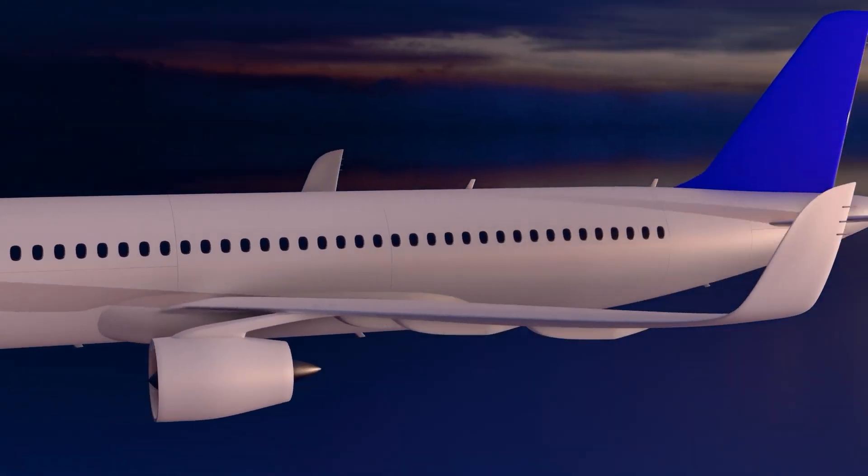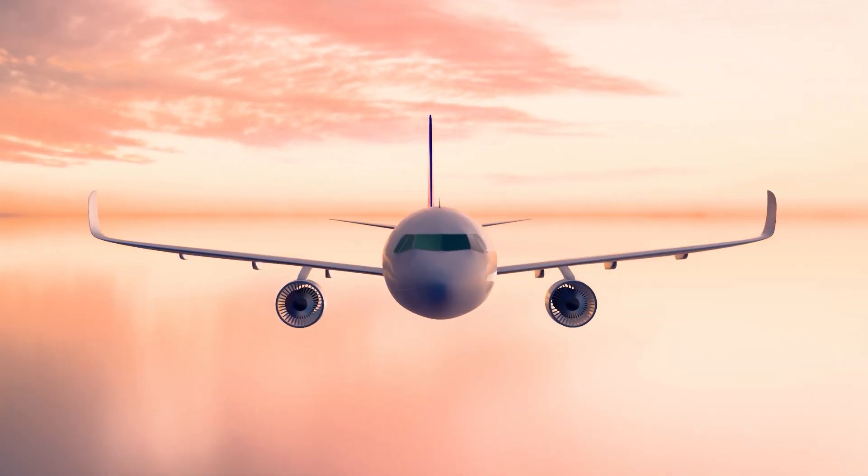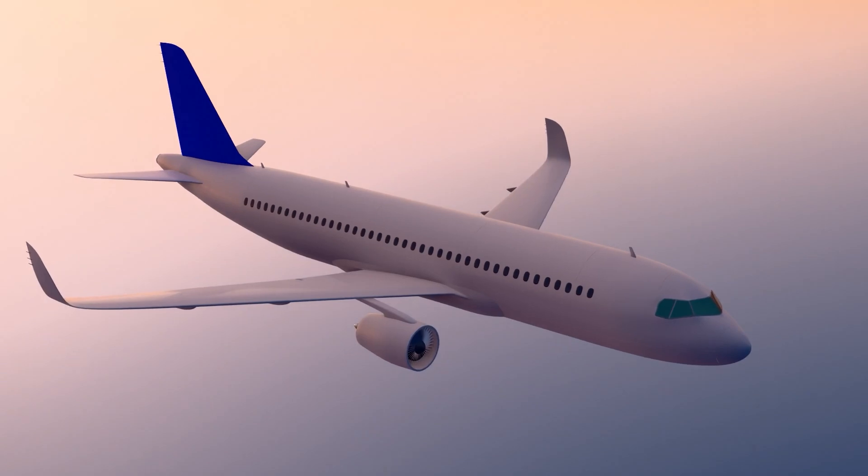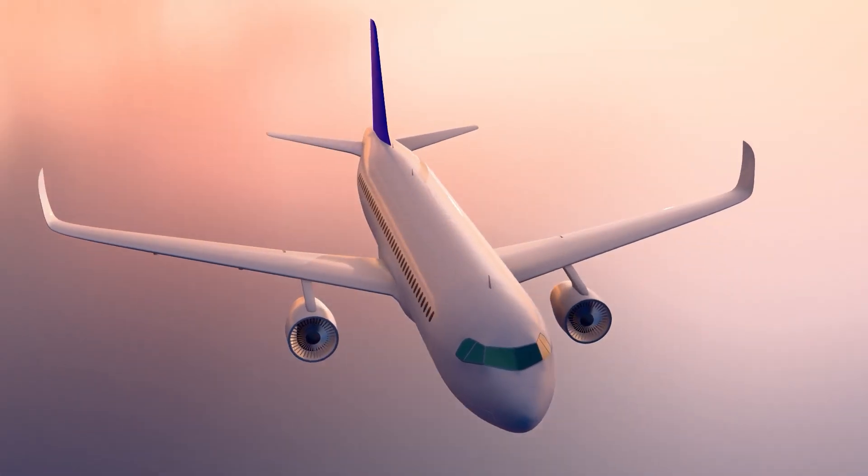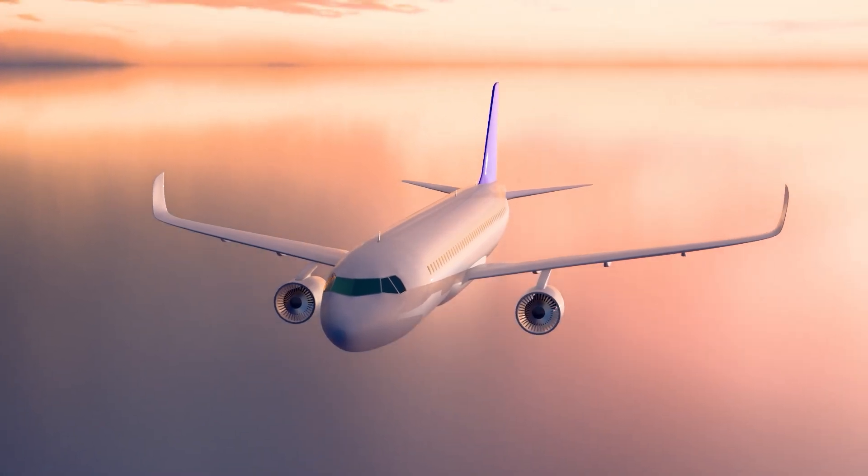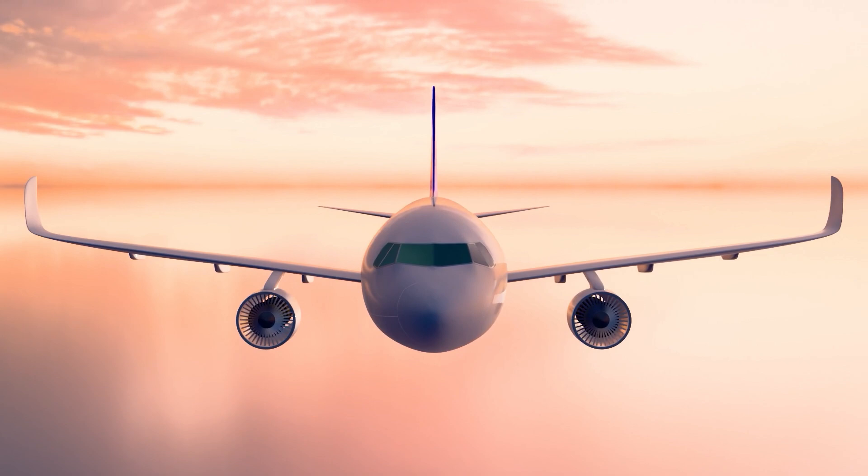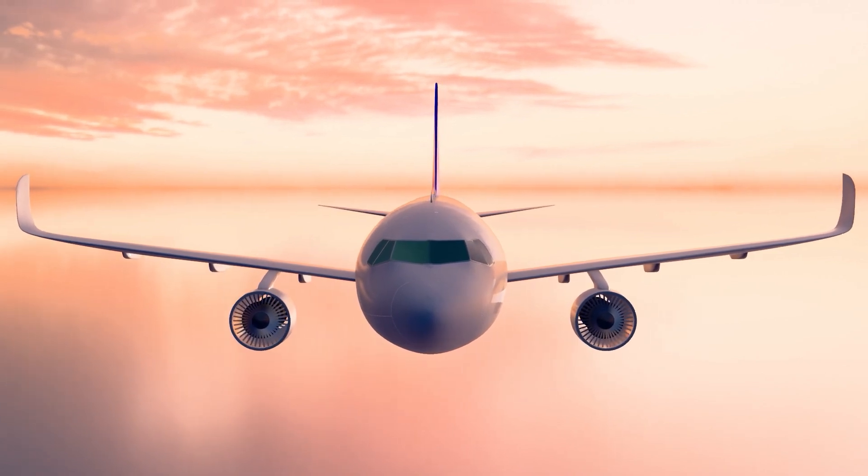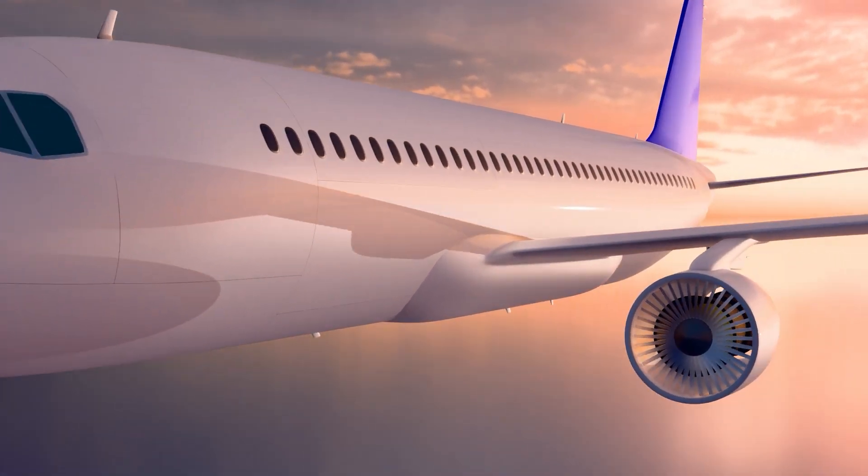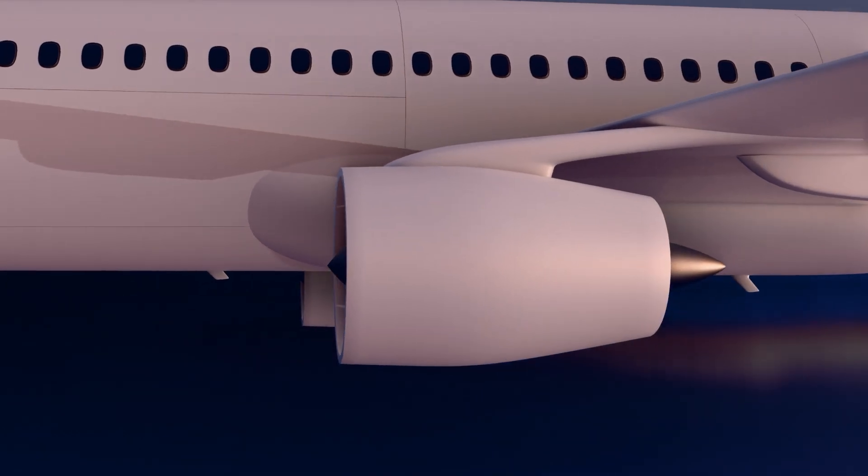This is an Airbus A320. It has a weight of approximately 75 tons. Lifting such a heavy aircraft into the sky requires a significant amount of power, which is provided by the turbofan jet engines mounted under the wings. Turbofan engines are the predominant type of jet engines used to propel commercial aircraft. Let's take a closer look inside the engine to see how it works.